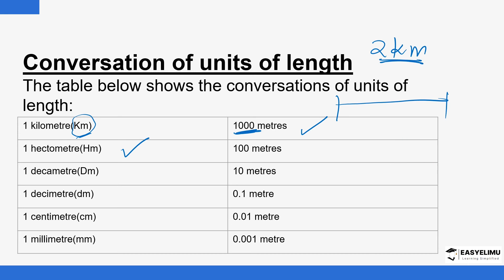There is also the hectometer. Take note of the symbol used. Hectometers are used for relatively longer distances. One hectometer has 100 meters in it. There is also the decameter, which is commonly used. Deca stands for 10 meters.